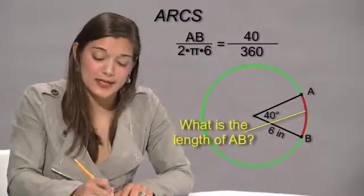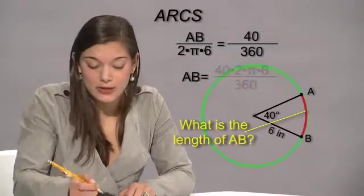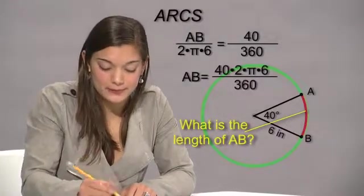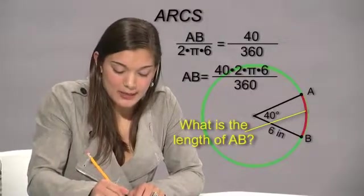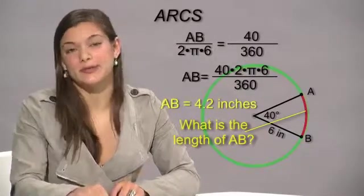And now we can just cross multiply to figure out what AB is. So we cross multiply and AB equals about 4.2 inches.